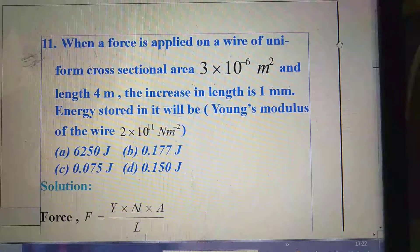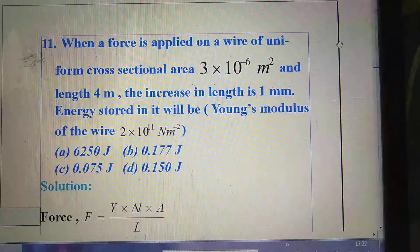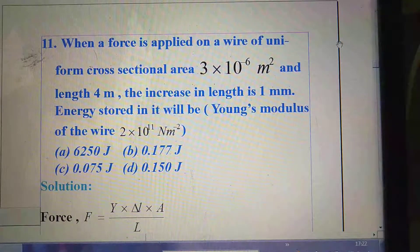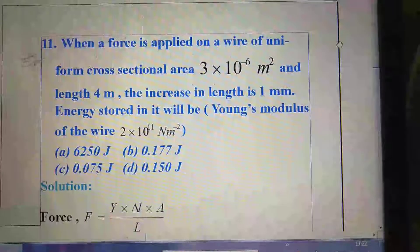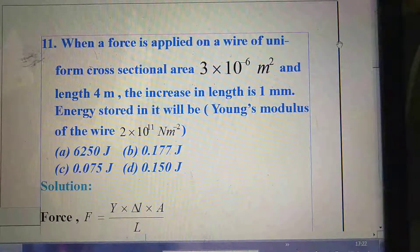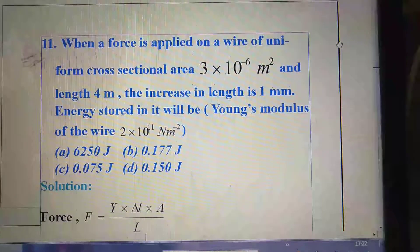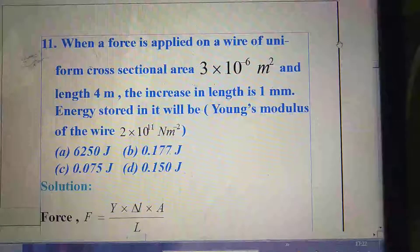First option 6250 joule. Option B 0.177 joule. Option C 0.075 joule. Option D 0.150 joule.